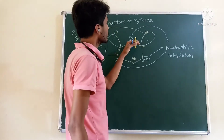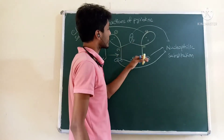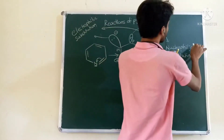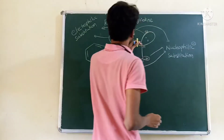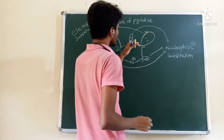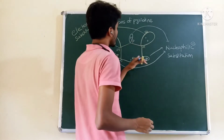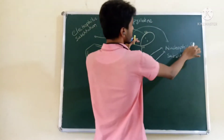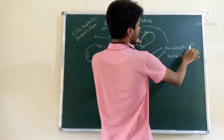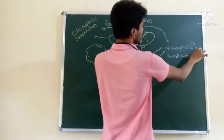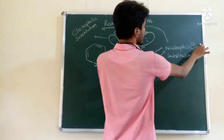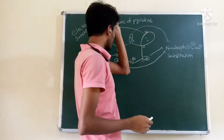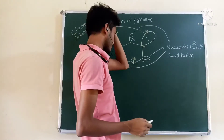So what will happen? The ortho and para positions undergo nucleophilic attack — nucleophile means negative charge, nothing but a lone pair of electrons. So the ortho and para positions undergo nucleophilic substitution reaction.